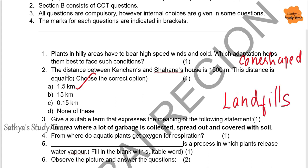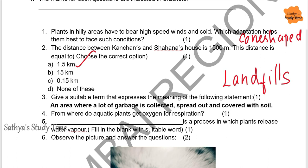Landfills — writing it down so you will remember with the example. Next: From where do aquatic plants get oxygen for respiration? Oxygen dissolved in water — from this they get oxygen for respiration. Blank is a process in which plants release water vapor. The answer is transpiration.